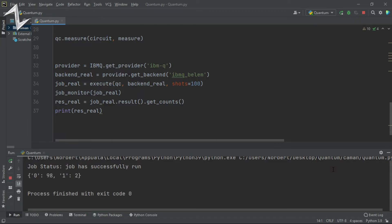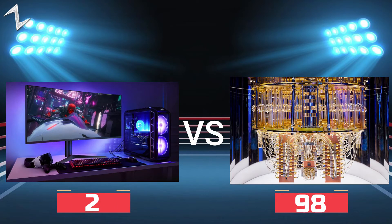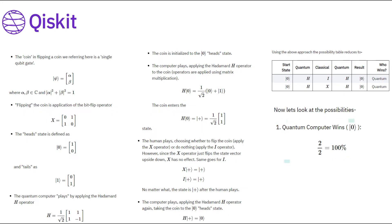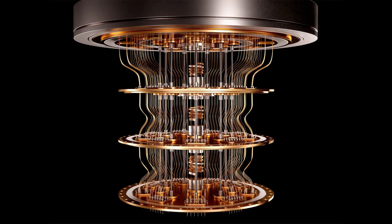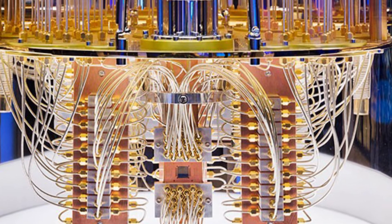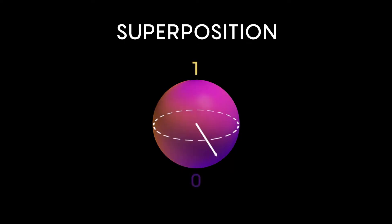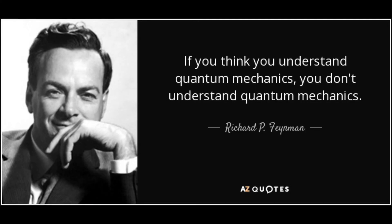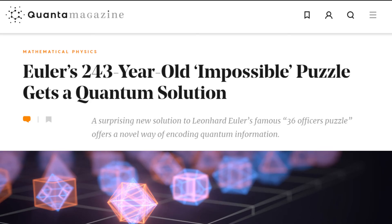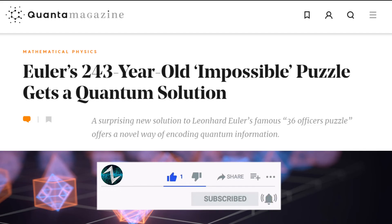As you can see, the quantum computer wins 98% of the time and my computer wins 2% of the time. That 2% is because of operational errors in the quantum computer, because they're not perfect yet. The reason the quantum computer wins almost all the time is that it uses an advantage named superposition — that means it can flip the coin and not flip the coin at the same time. I know it's weird, that's why I said it's hard to understand how quantum computers work.